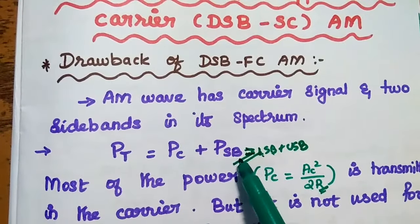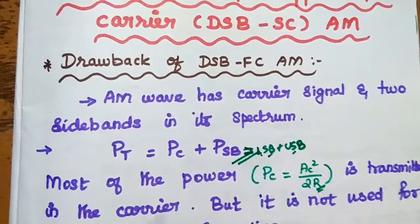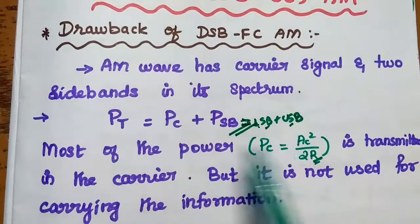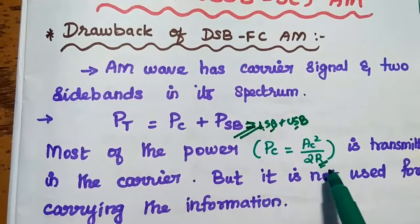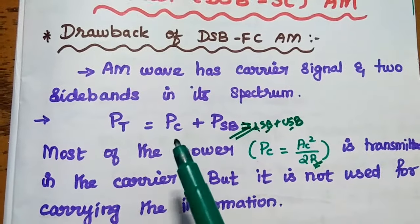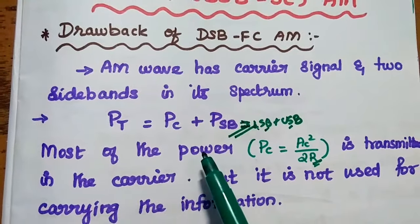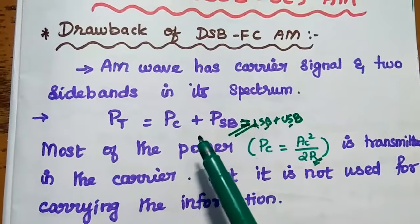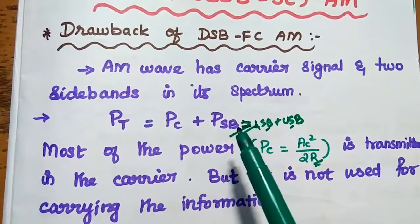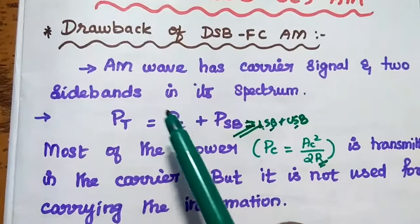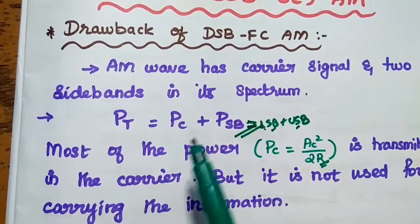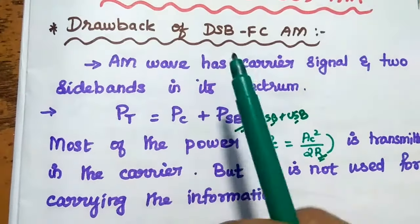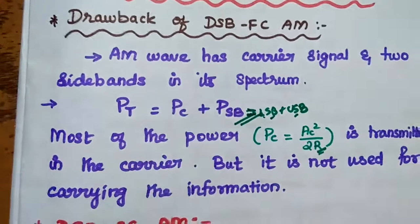Here the power of sidebands includes both lower sideband and upper sideband power. Most of the power is transmitted in the carrier, because carrier power is equal to AC squared by 2R. But the carrier signal does not contain any information. It is not used for carrying the original information. The information is available only in the sidebands. So unnecessarily we are transmitting this carrier power along with the sideband power. That is the major drawback in double sideband with full carrier amplitude modulation.